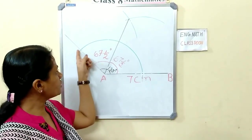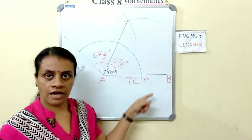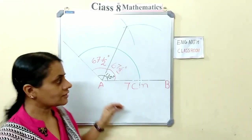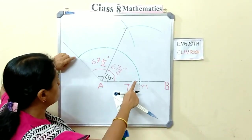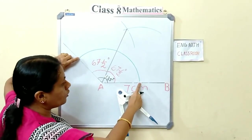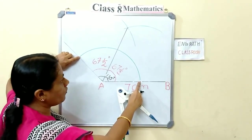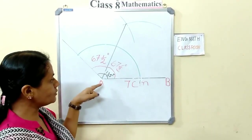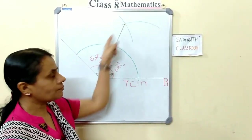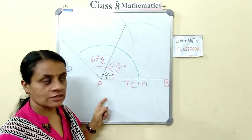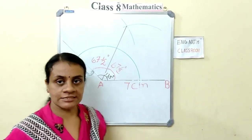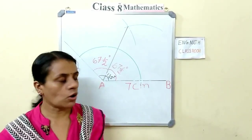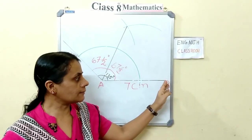To draw angle A of 67 and a half degrees, draw the angle bisector of 135 degrees. Keep the compass at A as center, take any radius, draw an arc, then draw the perpendicular bisector of the two arc points and join the two meeting points.